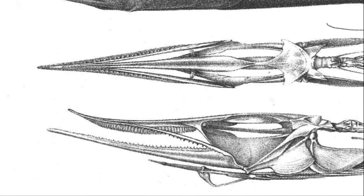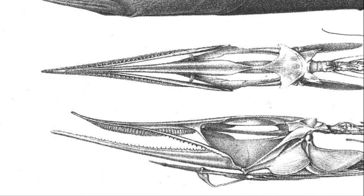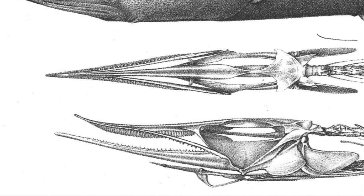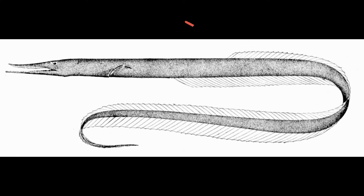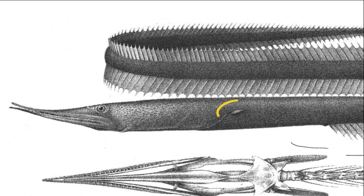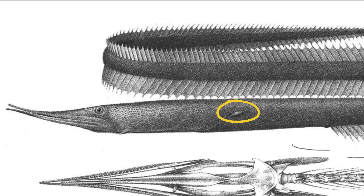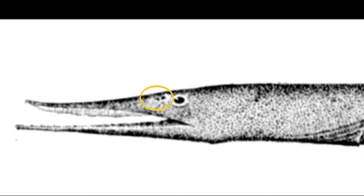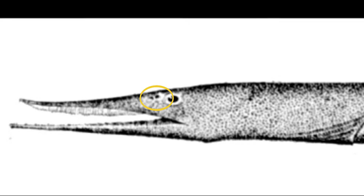Sawtooth eels are characterized by blade-like or conical teeth on the roof of their mouth. Their dorsal fin begins well behind their head. The dorsal, caudal, and anal fins are all continuous. Their pectoral fins are small or entirely absent. Their lateral line is reduced to only a few pores on their head. Their nostrils are located right in front of their eyes.